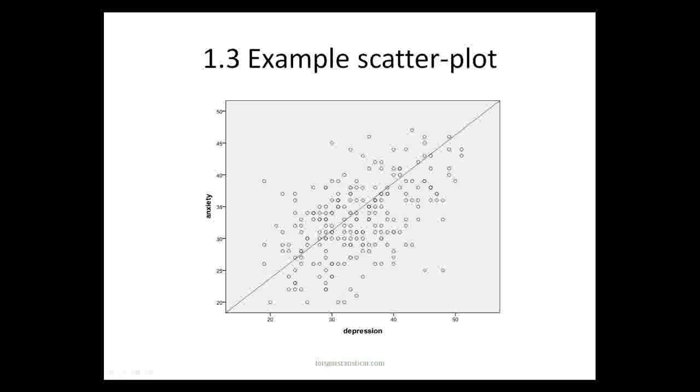Now this has plotted people's anxiety. That is their response to an anxiety scale versus their response to a depression scale. As people's anxiety scores increase, so do their depression scores. Each point on there represents one person's anxiety score where it meets with their depression scores. There is a line going through the middle that best summarizes the relationship between the data and we'll discuss how we get to that in a minute.